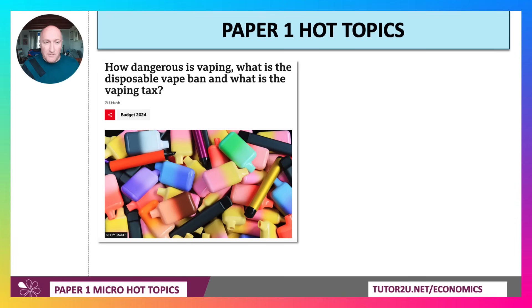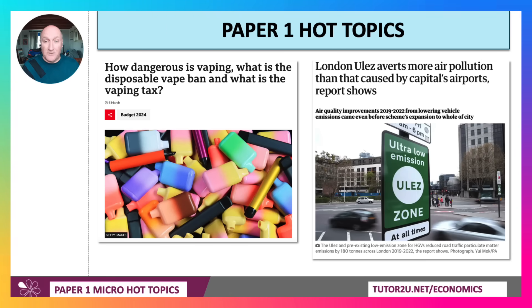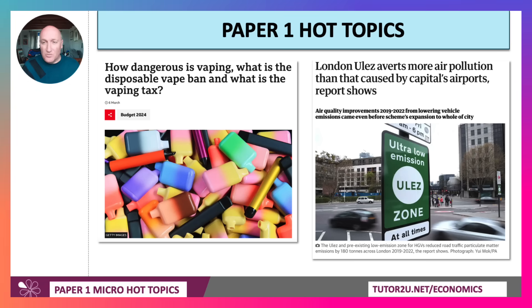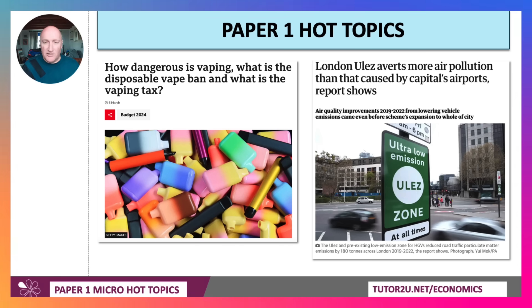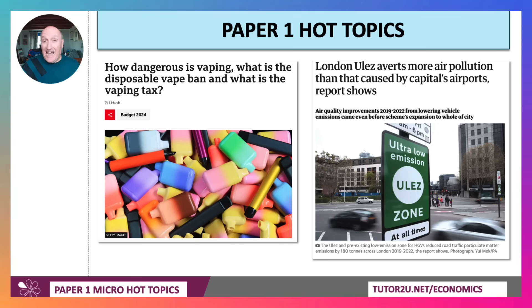Here's a topical issue from March 2024, but going back obviously many years: how dangerous is vaping? What is the disposable vape ban? And what is the vaping tax? These represent different types of intervention in that industry. And here's an article on London's ULEZ — this ultra-low-emission zone averts more air pollution than caused by the capital's airports, according to a new report. The ultra-low-emission zone came in a few years ago, and there's debate about whether it should be widened, or whether a range of other interventions is needed to achieve significant improvement in air quality and air pollution.